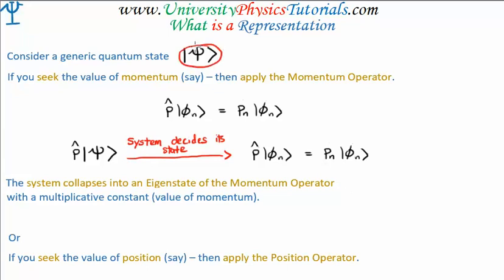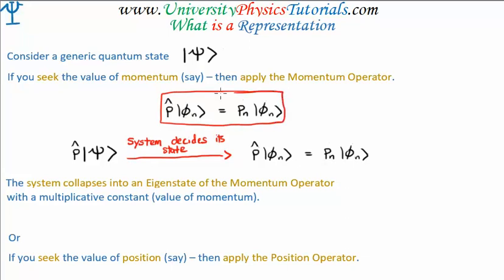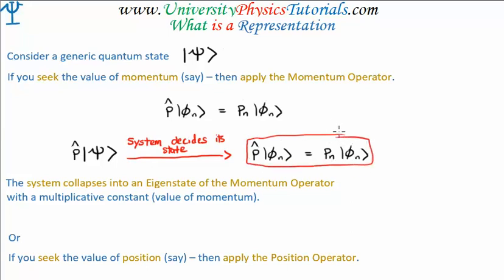Let's consider the generic quantum state vector, capital psi. If you seek the value of momentum, then you need to apply the momentum operator, p hat. Applying this gives us the momentum eigenvalue equation. The arbitrary quantum state vector isn't necessarily in an eigenstate of the momentum operator. However, once you apply the momentum operator, the system must decide what value of momentum it has — it must choose the associated momentum eigenstate. It collapses or projects into an eigenstate of the momentum operator, giving us the momentum eigenvalue equation and allowing us to calculate the momentum of the system, p sub n. The system collapses into an eigenstate of the momentum operator with a multiplicative constant, which is the value of momentum.